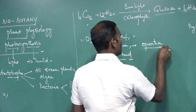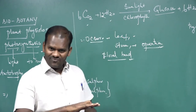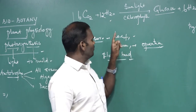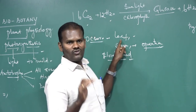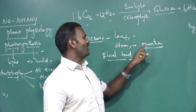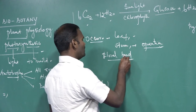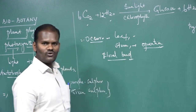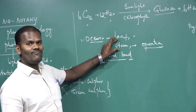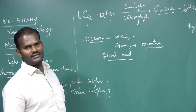Opuntia, commonly called prickly pear, has a stem that becomes flat and thick to take up the leaf function. Usually photosynthesis is performed by the leaf, but such leaf function is performed by the stem in Opuntia. Young floral buds also perform photosynthesis. So these are the regions or plant parts where photosynthesis occurs.